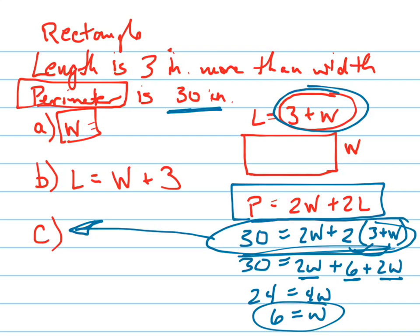Part D asks what is the length of the rectangle. We found the width is 6. Now to find the length: the length equals 3 plus the width, so 3 plus 6, which gives us the length of the rectangle.